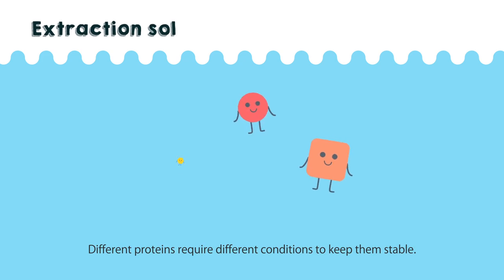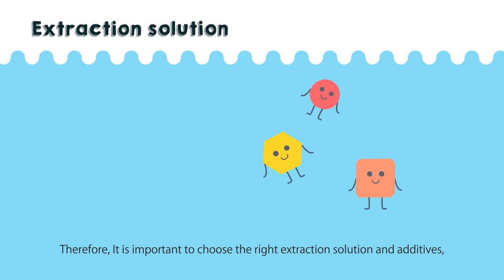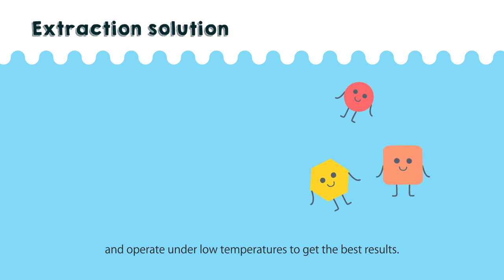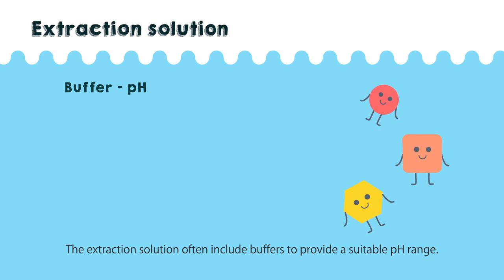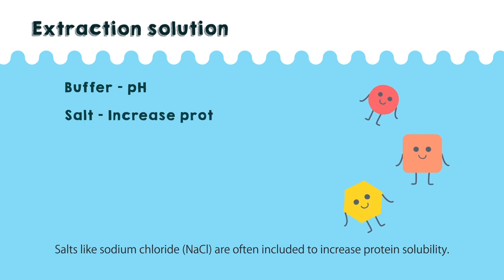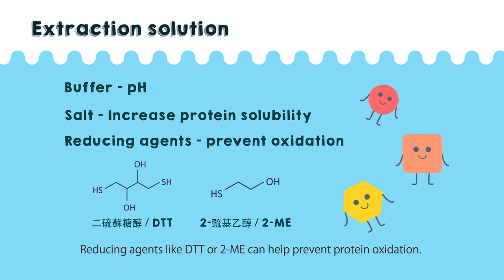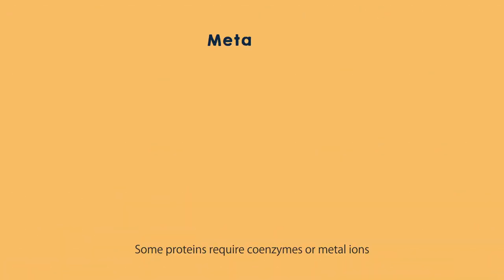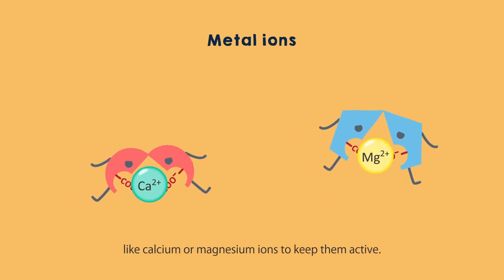Different proteins require different conditions to keep them stable. Therefore, it is important to choose the right extraction solution and additives and operate under low temperatures to get the best results. The extraction solution often includes buffers to provide a suitable pH range. Salts like sodium chloride (NaCl) are often included to increase protein solubility. Reducing agents like DTT or 2-Me can help prevent protein oxidation. Some proteins require coenzymes or metal ions like calcium or magnesium ions to keep them active.